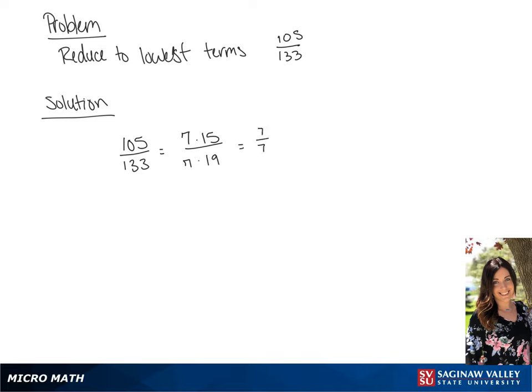So we have 7 over 7, which we know is equal to 1, times 15 over 19. This gives us the final answer of 15 over 19.